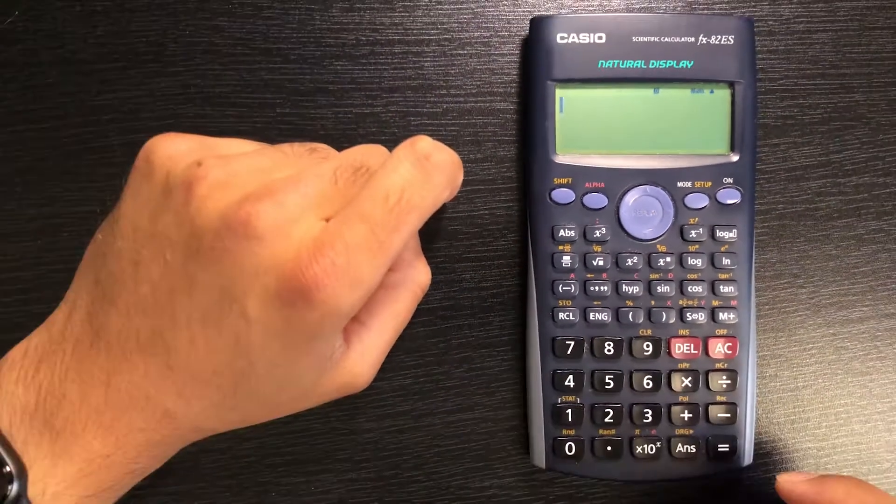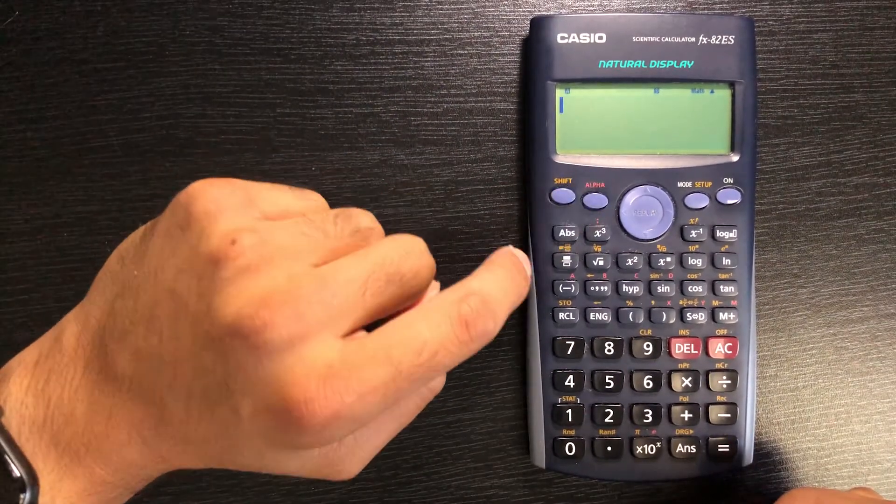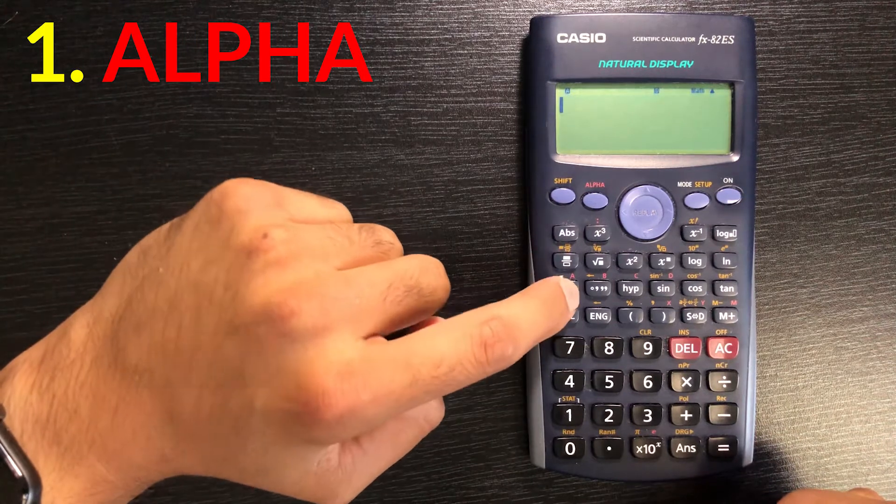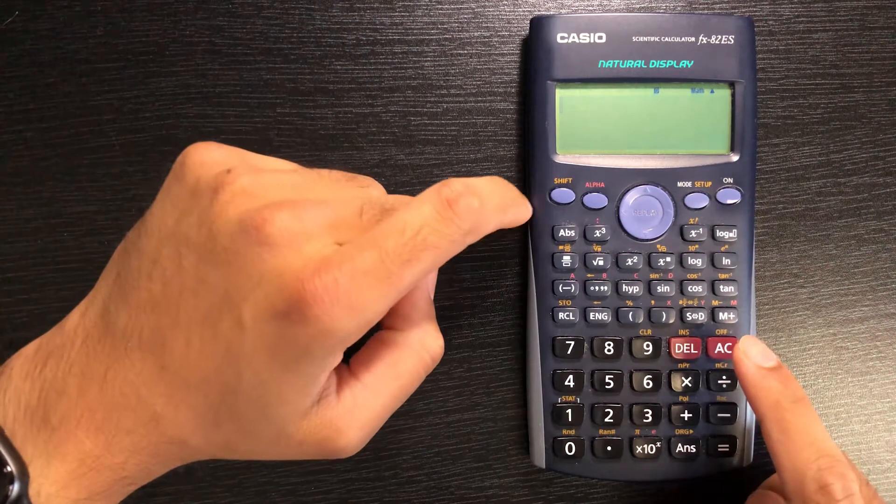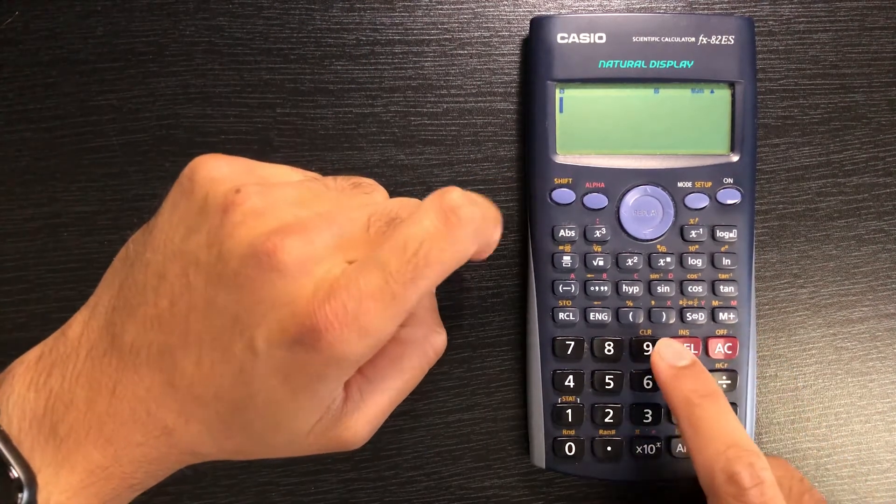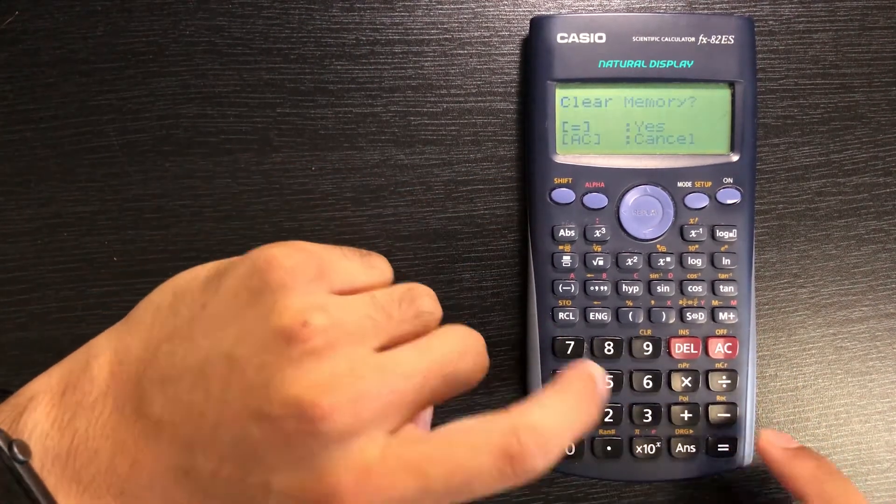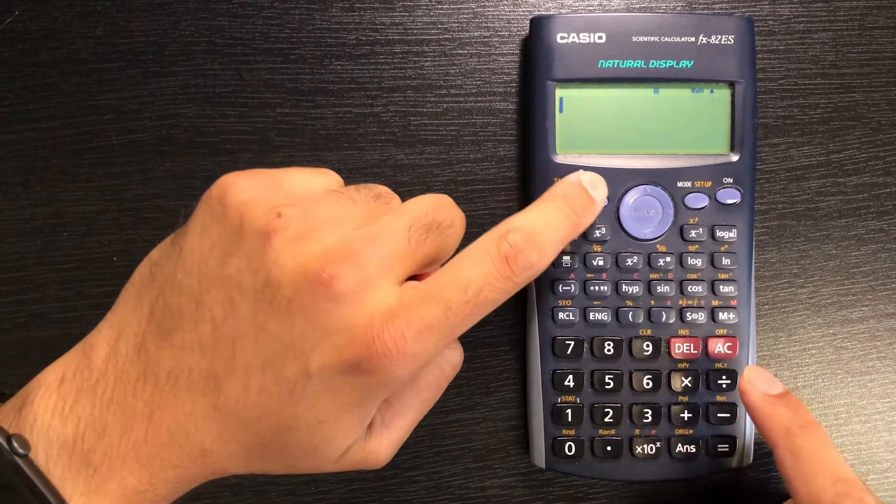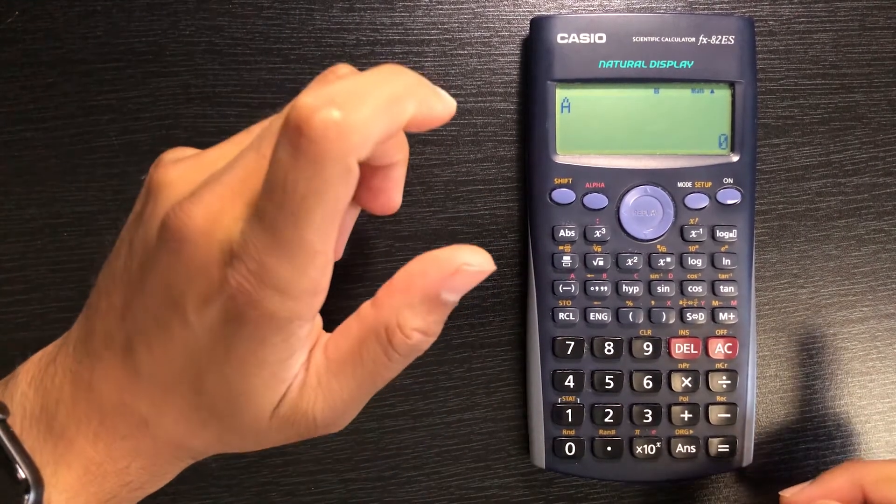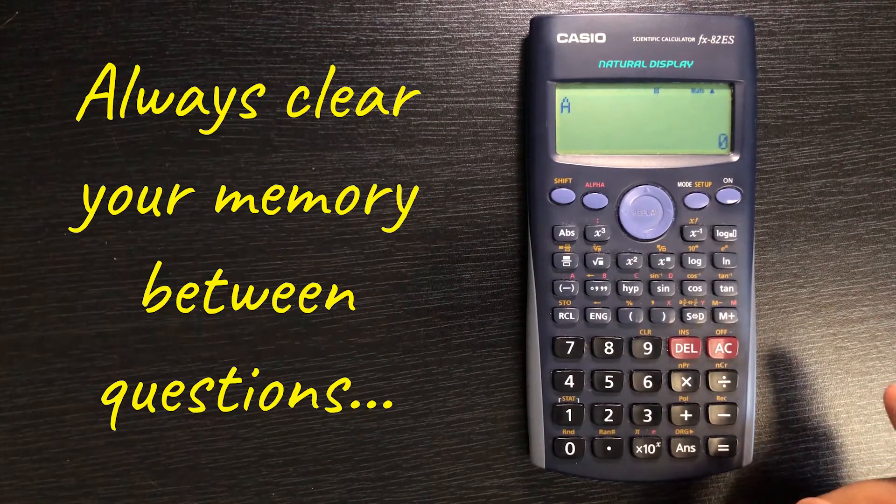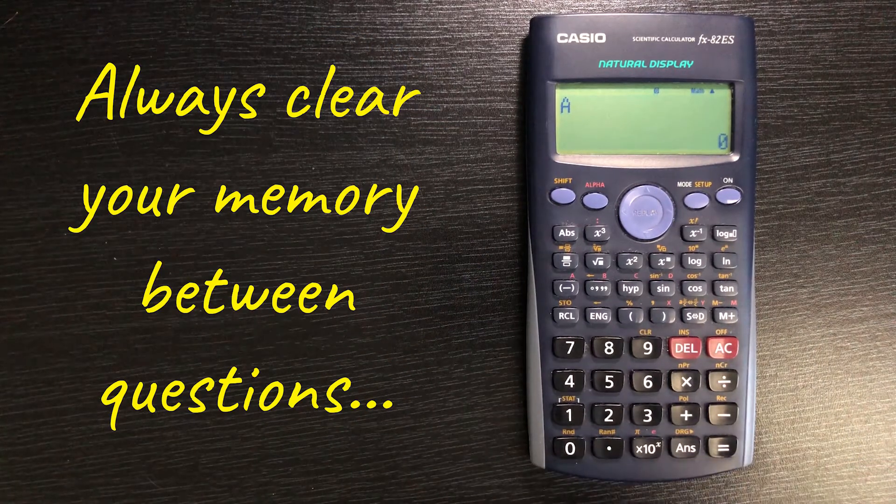Now if I hit AC and I bring up the letter a by pressing alpha then a, that is my stored value. Now if we clear our memory again - shift, clear, 2, equals - and I look up the value a again I will see that it's equal to 0. So clearing my memory cleared out that value.